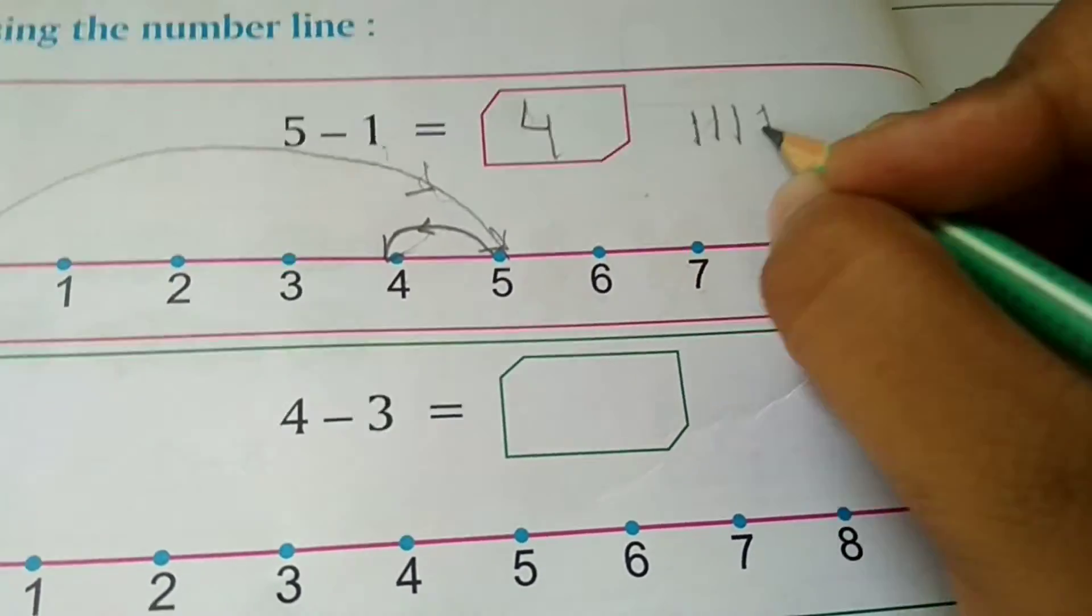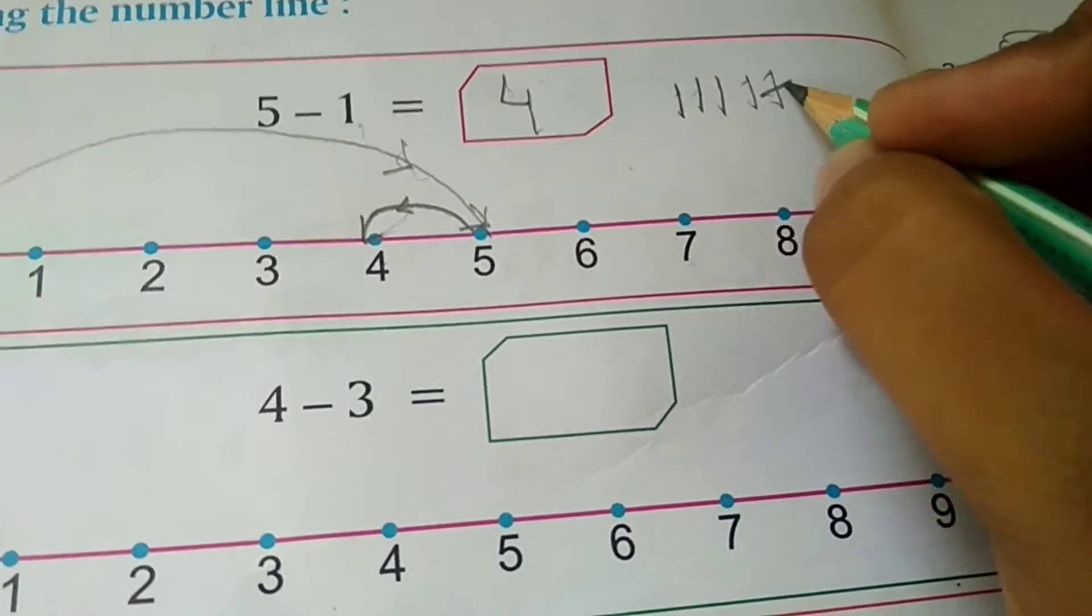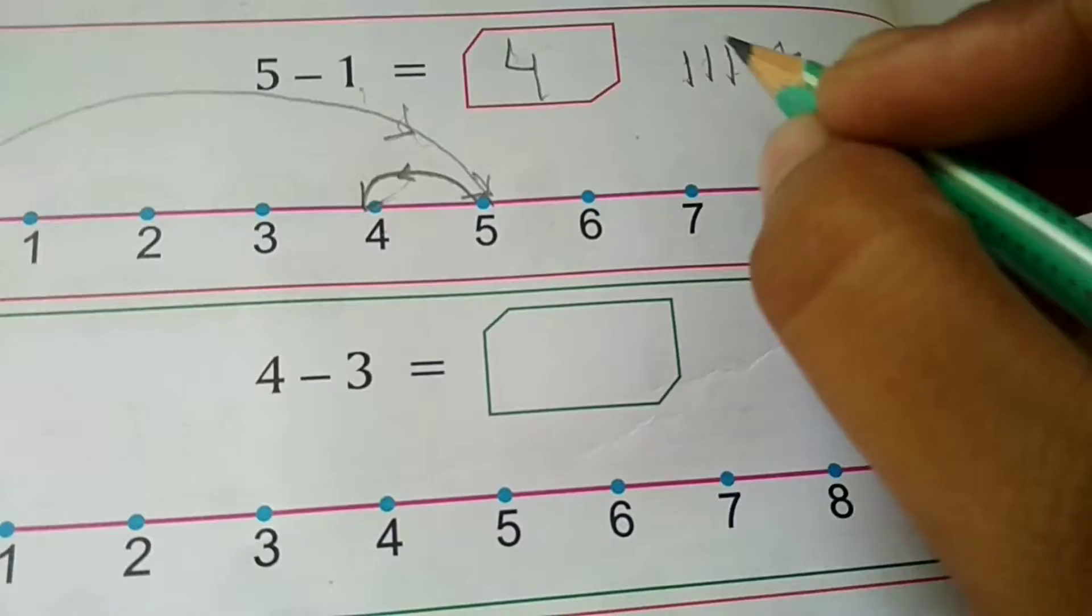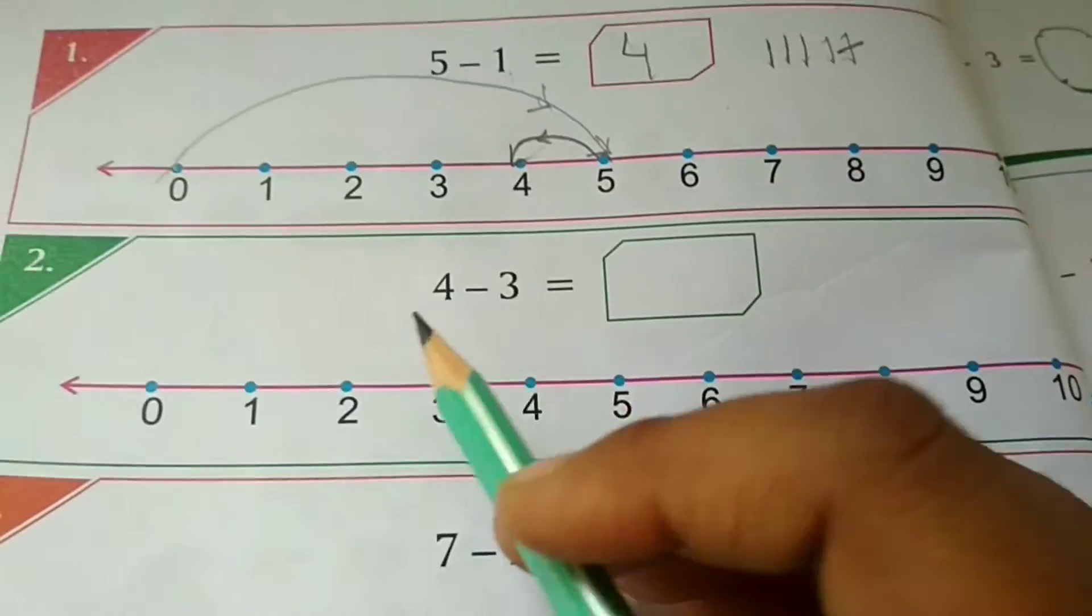1, 2, 3, 4, 5 minus 1. So 1, 2, 3, 4. Right? Second example.